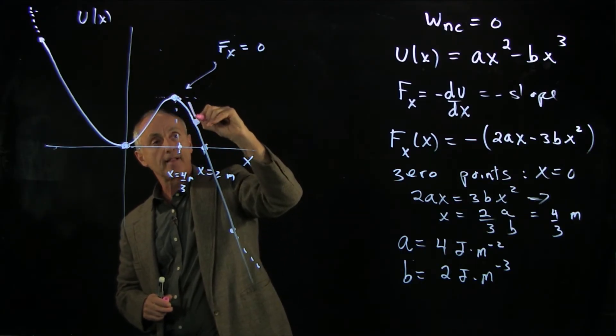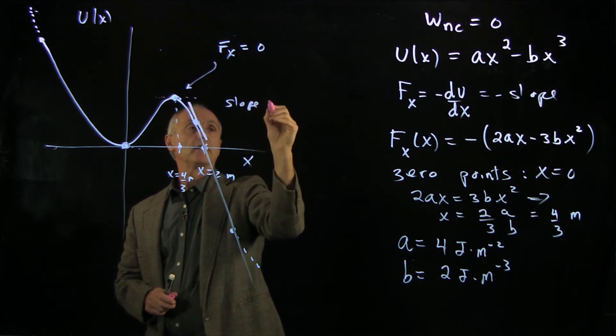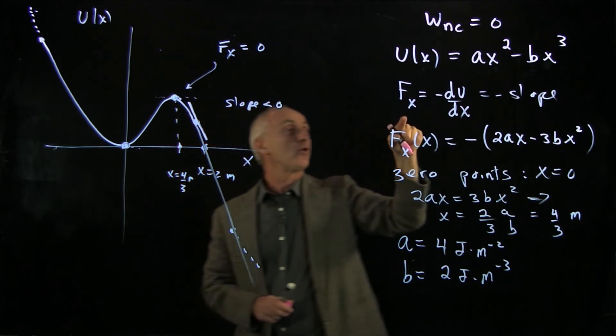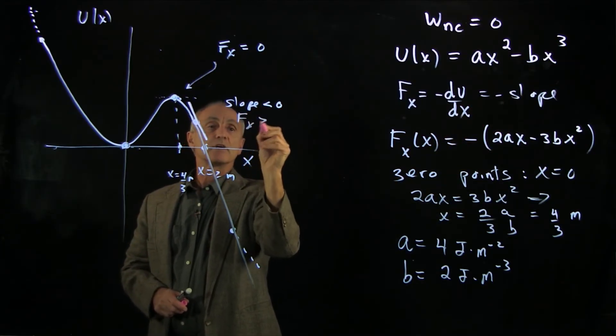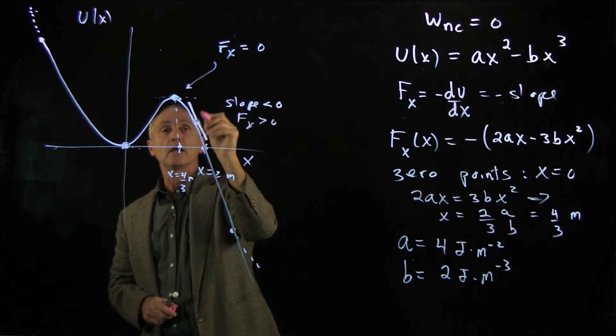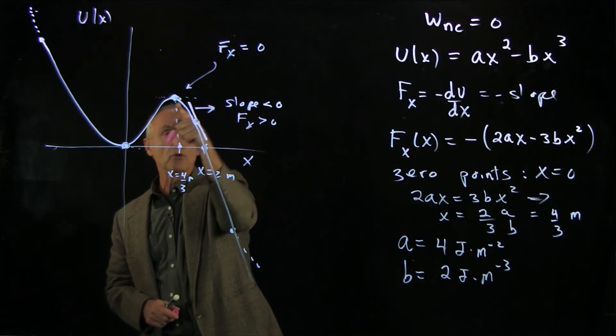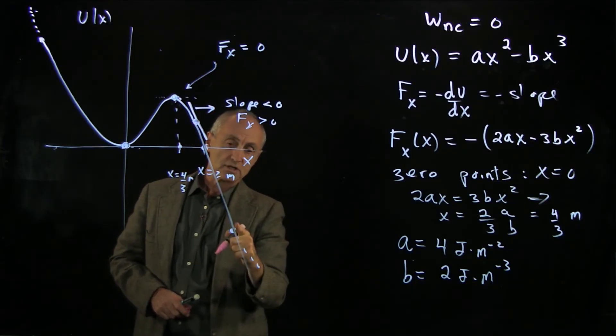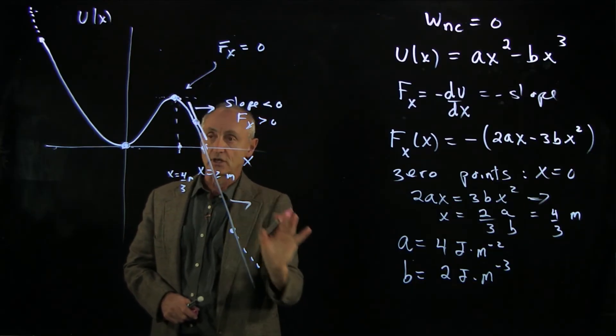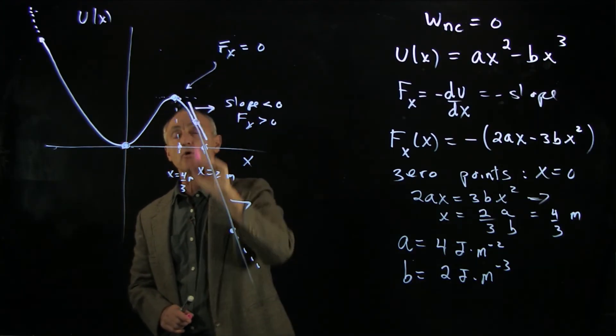To answer that, we can look at the slopes on either side of this zero. Over here, the slope is negative. But the force is minus the slope, so Fx is positive on this side. If a particle is displaced a little bit from this zero point, it moves off to the right. It will continue to feel a force in this direction and move away from this zero point of the force.